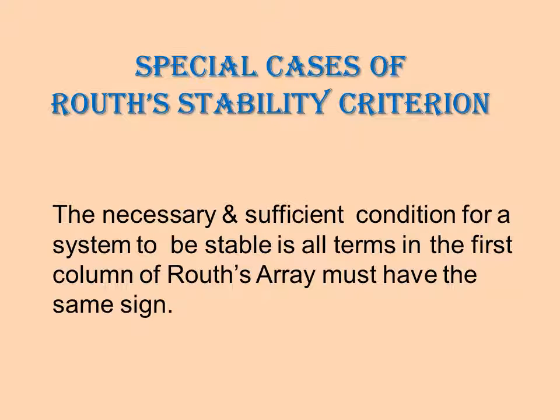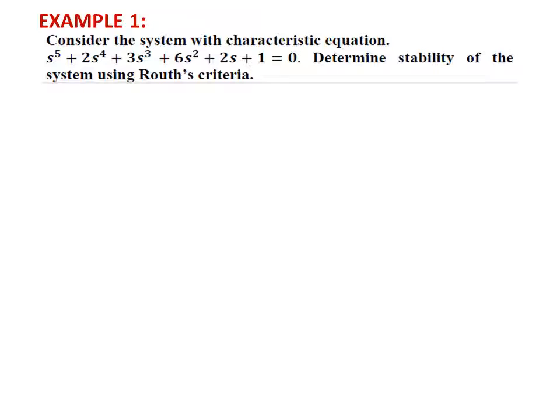Hello and welcome to the next video lecture on stability, that is Routh stability criteria. In this lecture we are going to see some special cases of Routh stability criteria. The necessary and sufficient condition for a system to be stable is that all terms in the first column of Routh's array must have the same sign. Consider the system with characteristic equation s^5 + 2s^4 + 3s^3 + 6s^2 + 2s + 1 = 0. Determine the stability of the system using Routh's criteria.